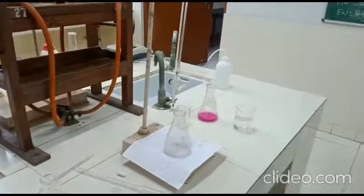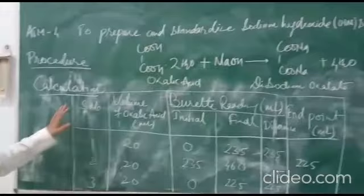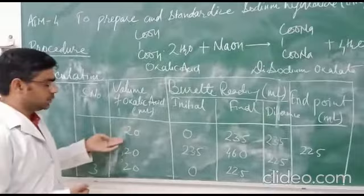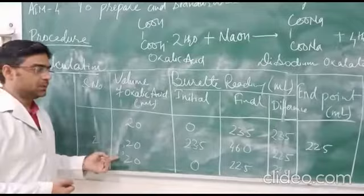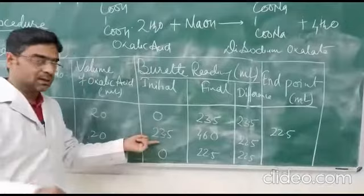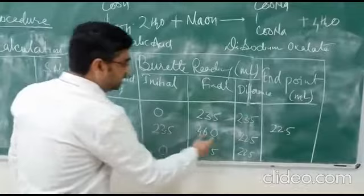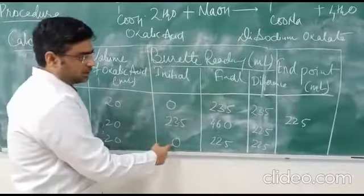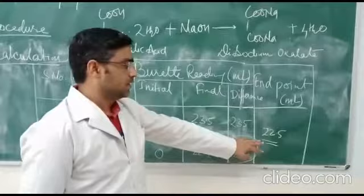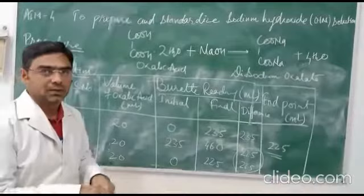The titration results are recorded in an observation table. The volume of oxalic acid taken is 20 ml each time. The initial burette reading is 0 ml; the final reading at the endpoint is 23.5 ml. We repeat the titration and get concordant readings — both at approximately 22.5 ml — which are recorded in the observation table drawn on a blank white page of the observation notebook.